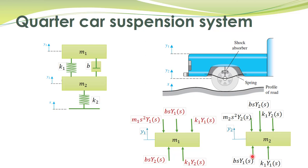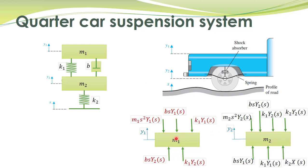The force due to the connecting spring is proportional to the net displacement of that end of the spring. The force due to the tire spring is determined similarly by superposition: if the road end is stationary and M2 moves upward, the spring applies a downward force proportional to y2; if M2 is fixed and the road moves upward, the spring applies an upward force. These forces are shown in the free body diagram.